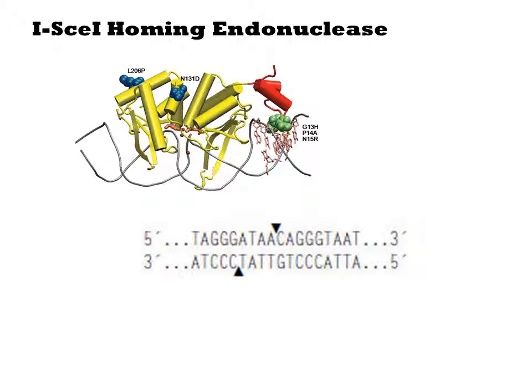The third component is the ISCE1 homing endonuclease. This is basically a restriction enzyme, but it recognizes a very long and specific sequence. The recognition is sufficiently long and specific that such sites are unique within E. coli. Thus, any DNA that contains this sequence can be specifically cleaved without affecting the viability of the cell.